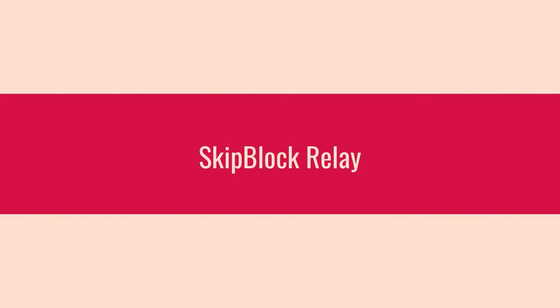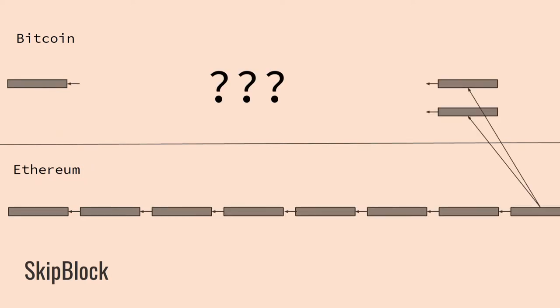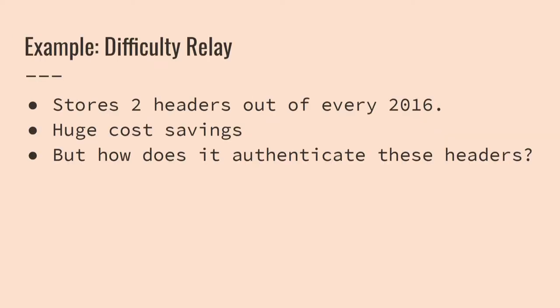So we came up with a bunch of additional ways to achieve the same goal, and one of them is the Skip Block Relay. Compared to BTC Relay, you're going to take some headers and shove them over to Ethereum, and then you're just going to skip the next 2,000 headers. So the main thing here is that we're trying to cut down on gas costs by just not forwarding thousands of headers.